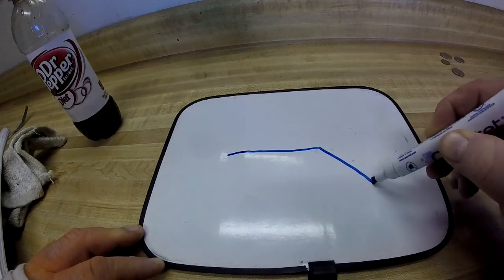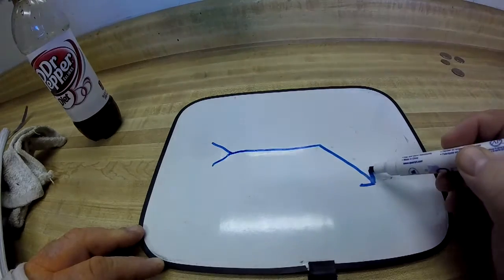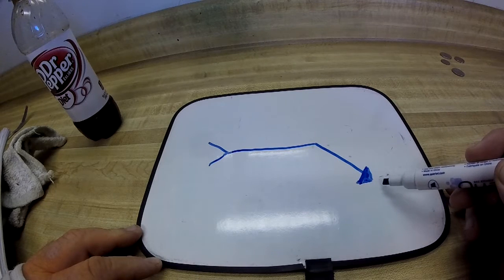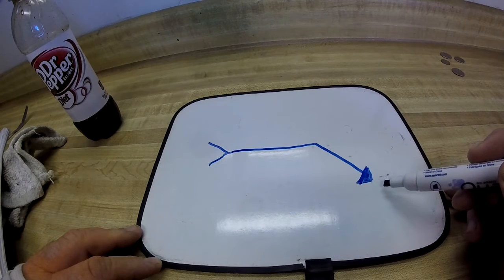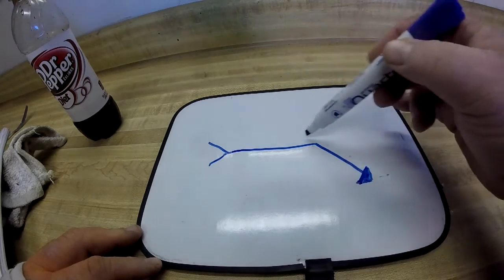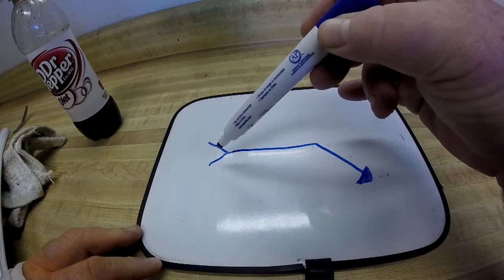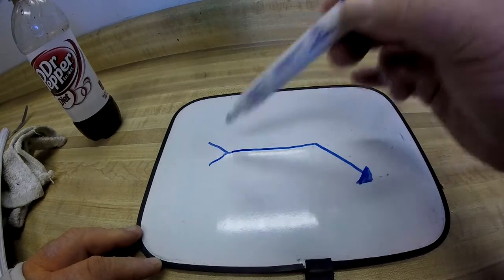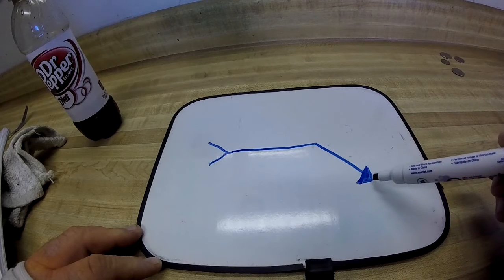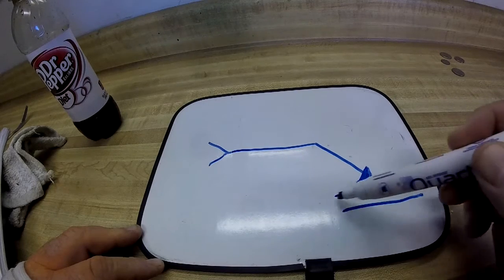The welding symbol. Alright, this part right here is the arrow, and it connects the reference line to the arrow side member of the joint or arrow side of the line. This area right here is the reference line, and this is the tail, which gives the specification processes or other references.